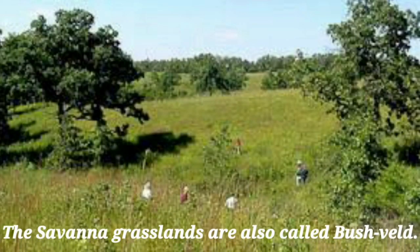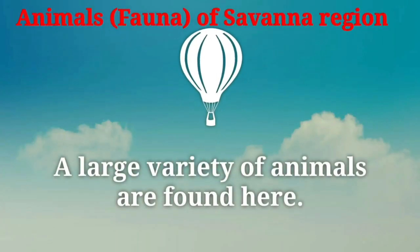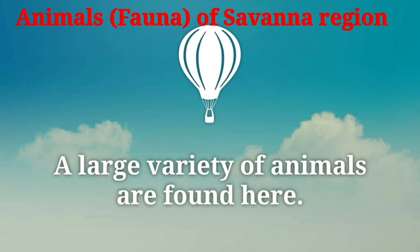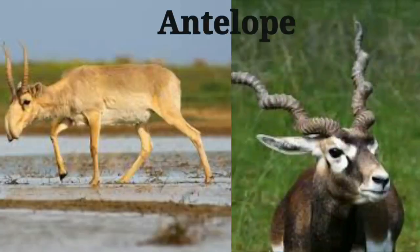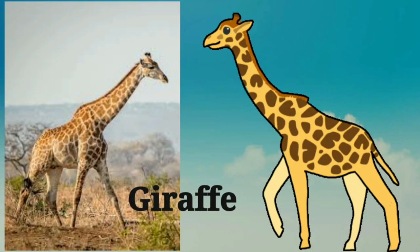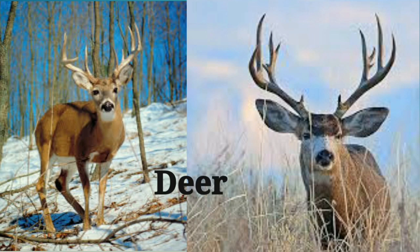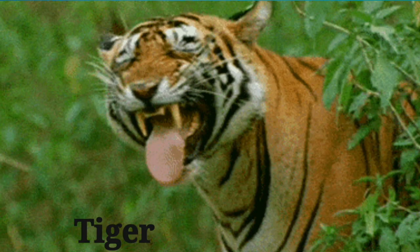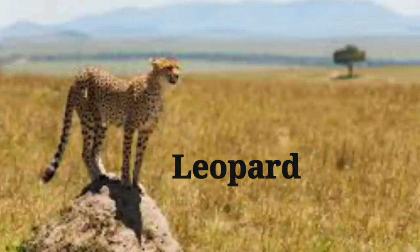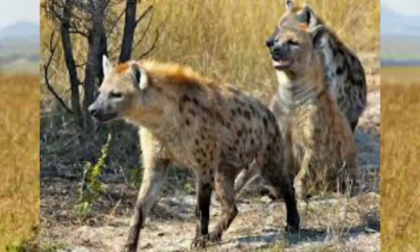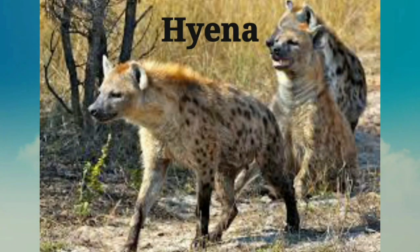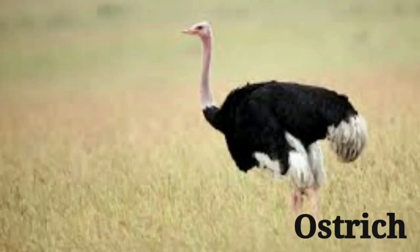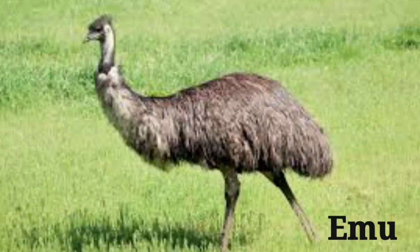The savannah grasslands are also called bush veld. A large variety of animals are found here, like zebra, antelope, giraffe, deer, gazelle, tiger, lion, leopard, and hyena. Besides this, birds like ostrich and emu are also found.